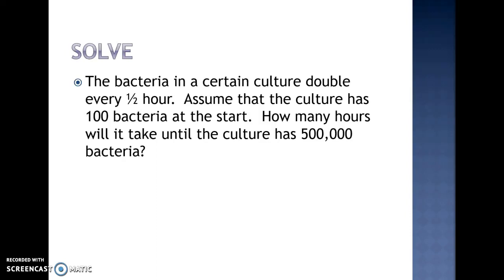For this problem we have a bacteria in a culture that doubles every half hour — there's our keyword 'double' and that's our doubling time. We assume the culture has 100 bacteria at the start, so that's P₀, population at time equals zero. We're asked how many hours it will take until the culture has 500,000.